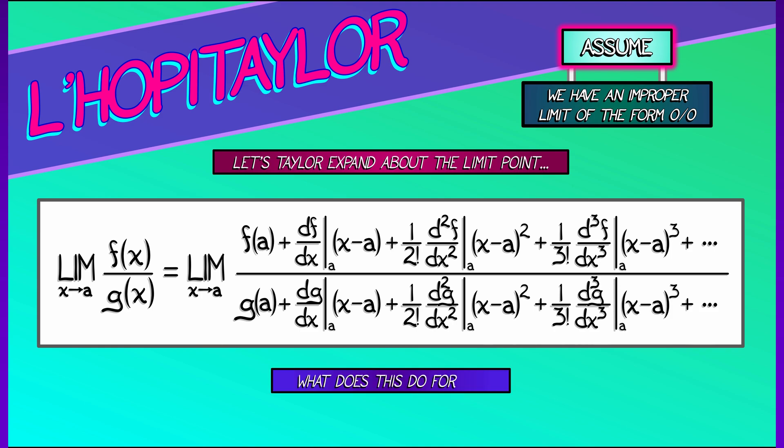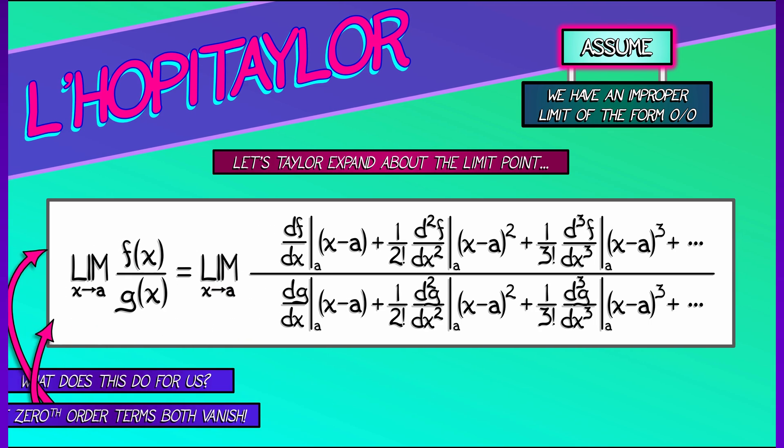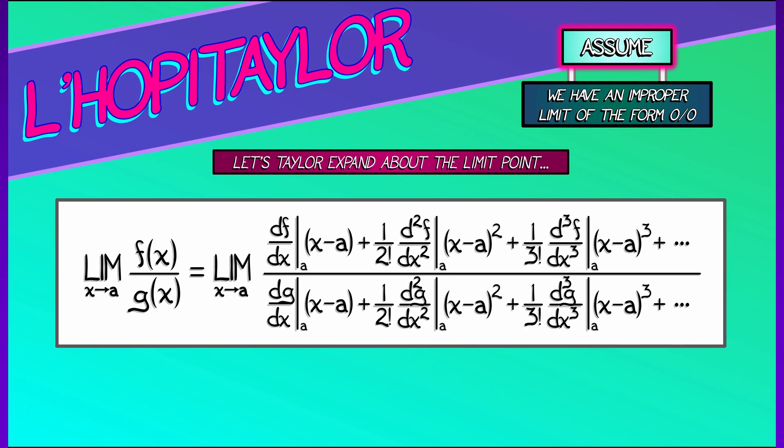Now, what does this do for us? Well, we know, based on our assumption, that f(a) is 0, g(a) is 0. Both of those terms vanish. So get rid of those guys. And what do we have? Aha!